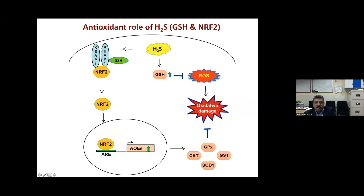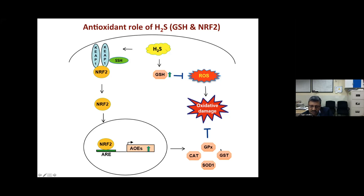Free Nrf2 — nuclear factor erythroid 2-related factor 2 — translocates to the nucleus and binds to the antioxidant response element (ARE) on DNA, increasing expression of antioxidant enzymes: catalase, superoxide dismutase, glutathione peroxidase, and glutathione S-transferase. Two convincingly demonstrated mechanisms thus exist: H₂S directly protects glutathione and indirectly upregulates antioxidant enzymes via the Keap1-Nrf2-ARE pathway.